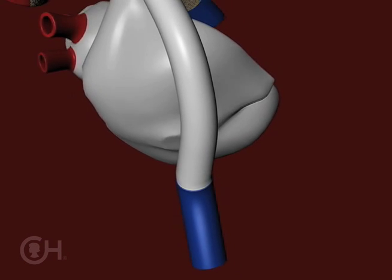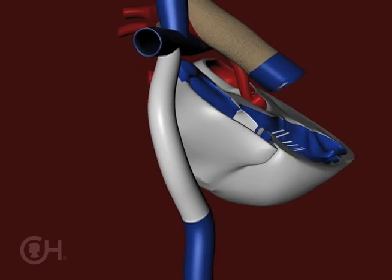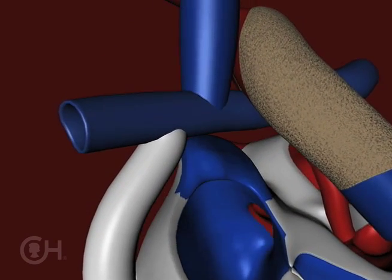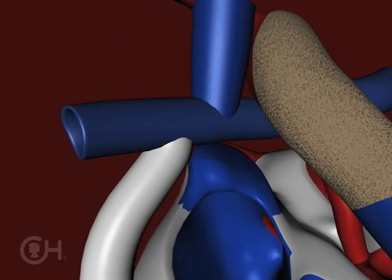We take this tube and loop it around the side of the heart and sew it into a hole we make into the pulmonary artery. So we essentially bypass the entire heart.